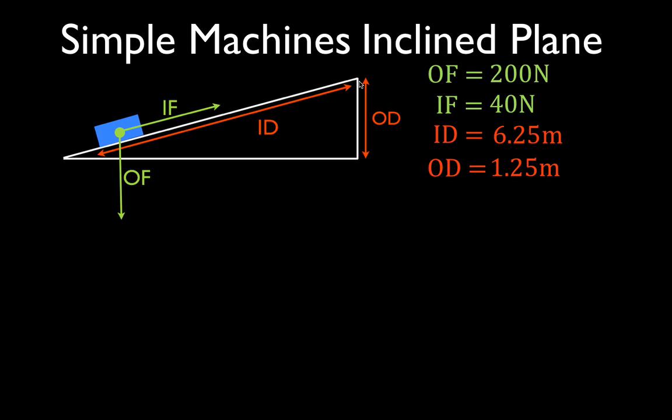All right, now, let me just say we have our values over here. We have the output force, which is the weight, so the object weighs 200 newtons. Using this incline plane, which has a length, the input distance of 6.25 meters, so it's 6.25 meters long,